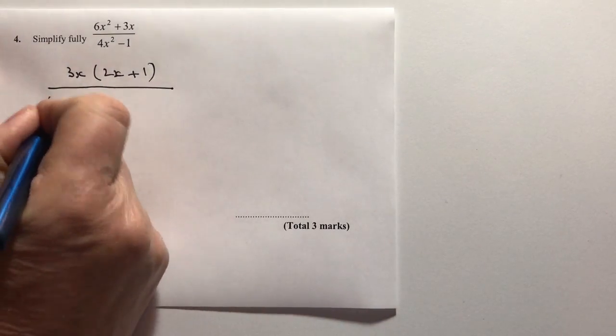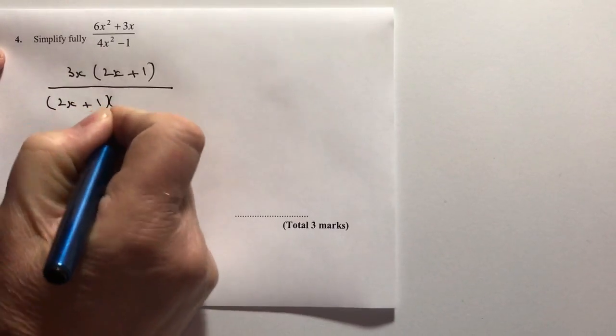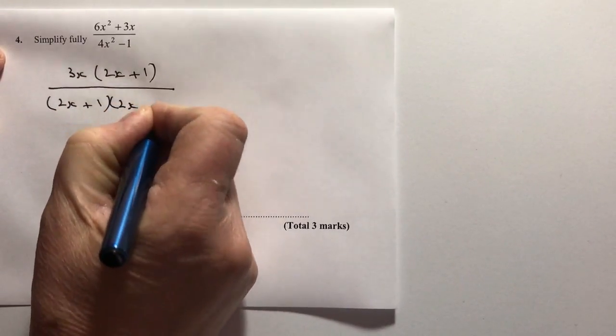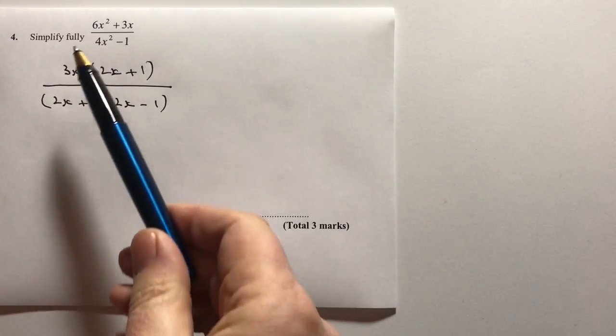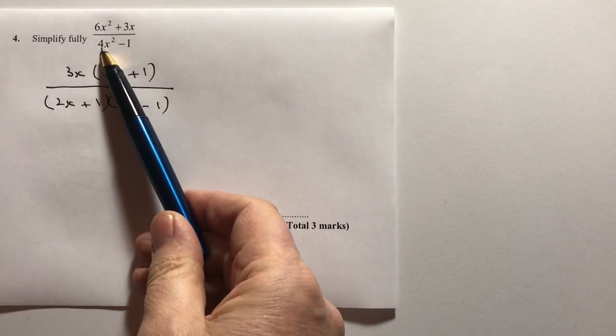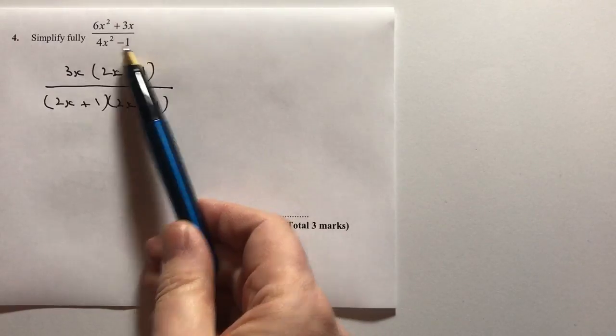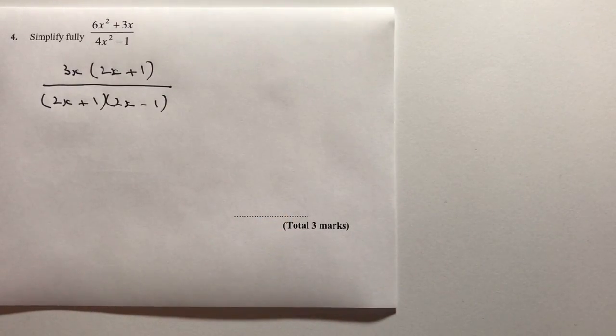I can factorize the bottom as 2x plus 1 multiplied by 2x minus 1. That's because I've recognized that 4 is a square number and 1 is also a square number because 1 times 1 is 1.